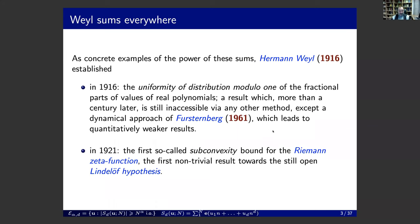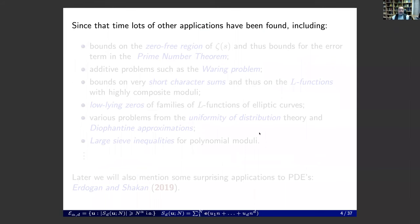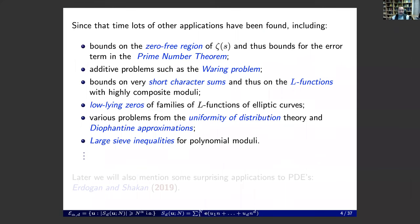A few years later, he also found another exciting application: he proved the first so-called subconvexity bound for the Riemann zeta function, which is the first non-trivial result towards the still-open Lindelöf conjecture. Since that time, lots of other applications were found — here is a very incomplete list: bounds for the zero-free region of zeta, solutions to Waring's problem and additive problems, bounds of short character sums, L-functions for highly composite moduli, and low-lying zeros of L-functions.